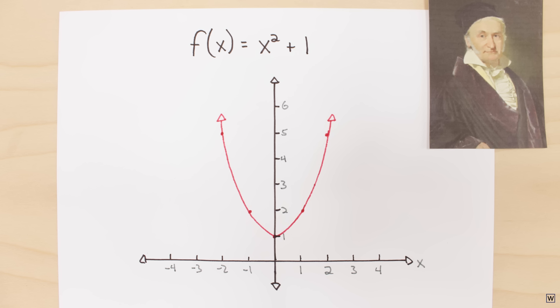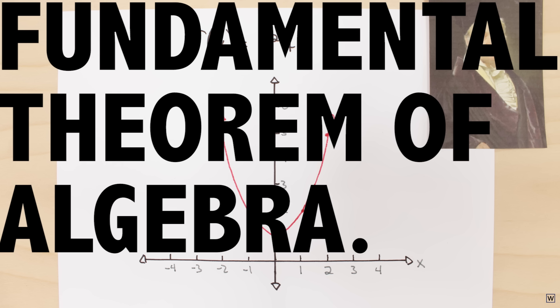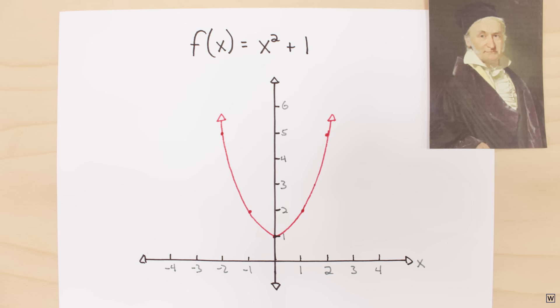And Gauss' discovery is not just some random rule. Today we call it the fundamental theorem of algebra. So our plot seems to disagree with something so important, it's called the fundamental theorem of algebra.